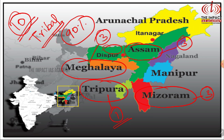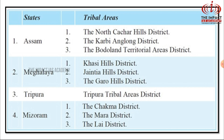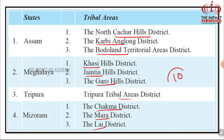So there are 10 areas presently. The Assam areas are: North Cachar Hills District, Karbi Anglong and Bodoland. Related to Meghalaya: Khasi, Jaintia and Garo. Tripura Tribal Area District Council. Then Chakma, Mara and Lai in Mizoram. Totally 10 areas are located under the Sixth Schedule of our Constitution.